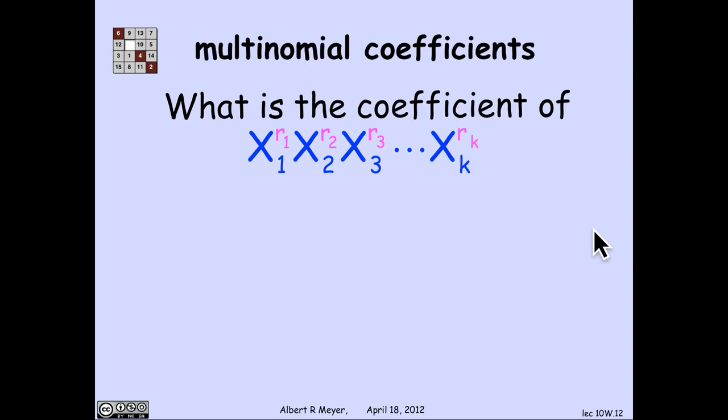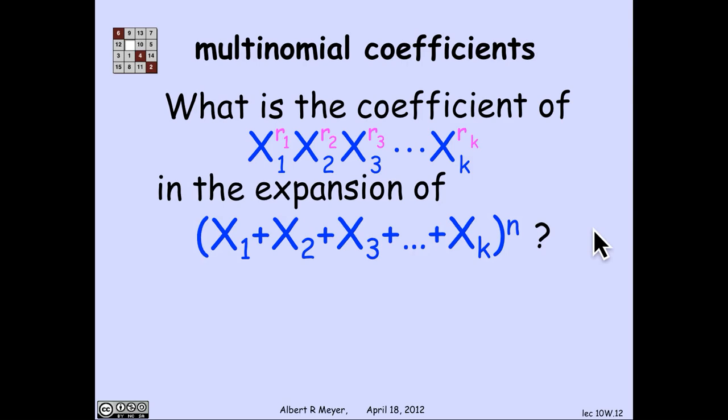More generally, this is what the multinomial theorem says. If I look at the coefficient of a product of x_i to the r_i's in an expansion of a k-nomial, a sum of k distinct variables raised to the nth power, if I expanded this out using the distributive law without collecting terms, I'd have k to the n terms, each of which was a permutation of the x1's through xk's with repeats.